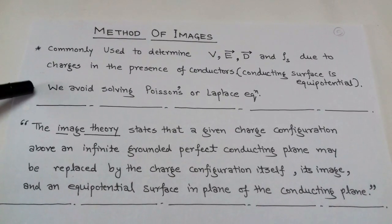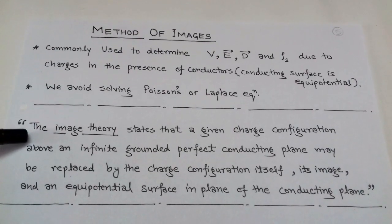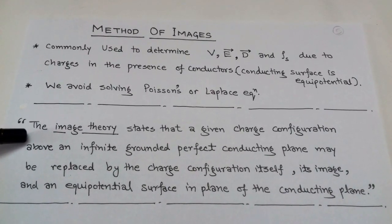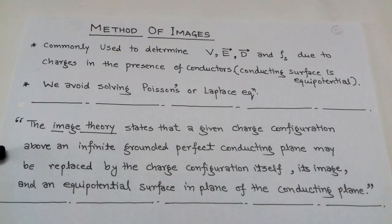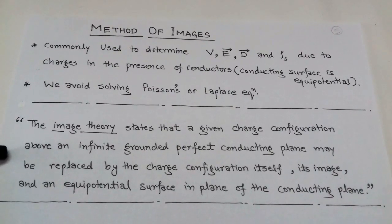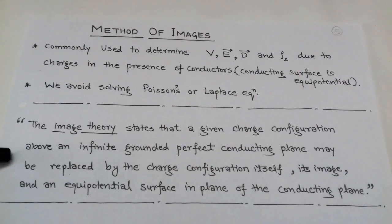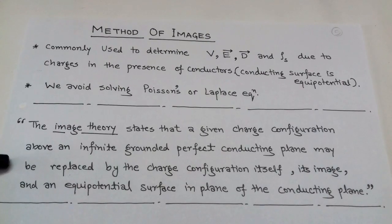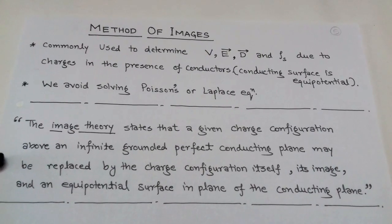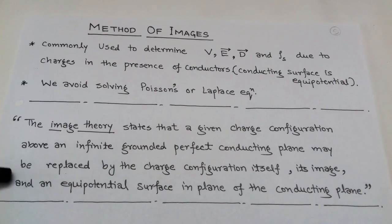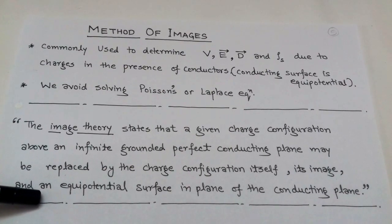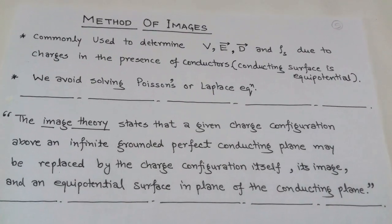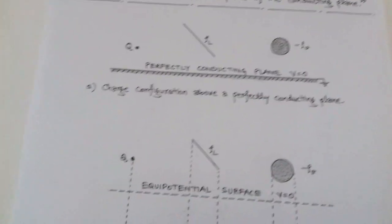The method of images is based on image theory, which states that if there is any charge configuration above an infinite conducting plane that is grounded — having a potential of 0 — that given charge configuration can be replaced by its image, and the perfect conducting plane is replaced by an equipotential surface having potential 0.